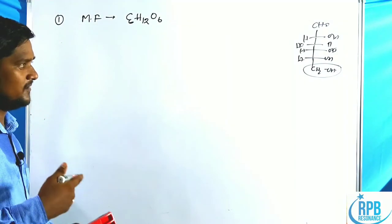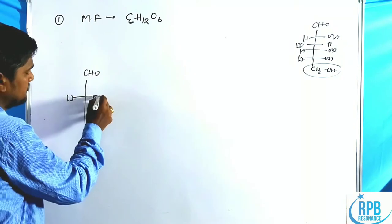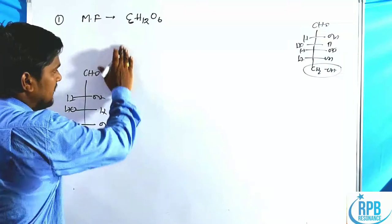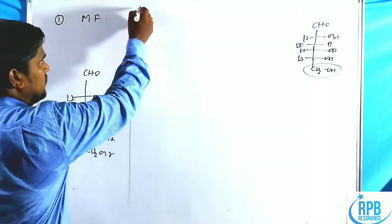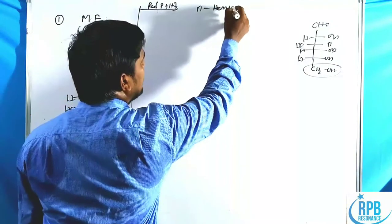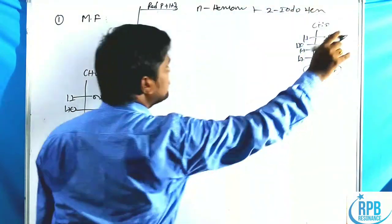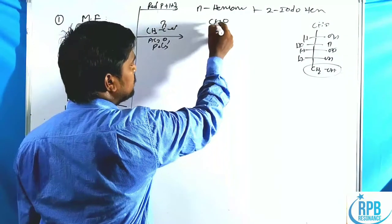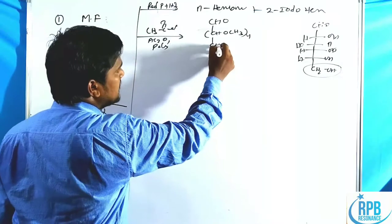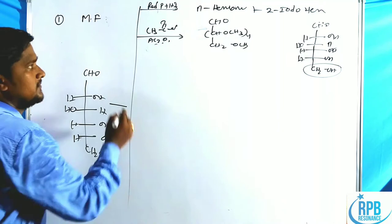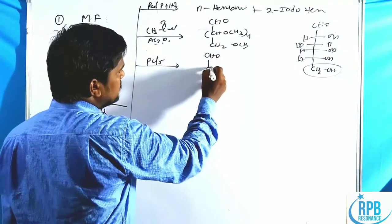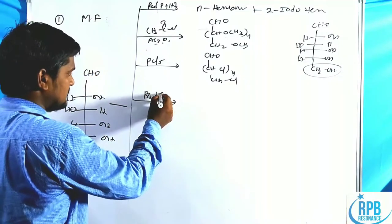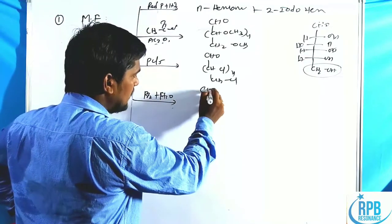For a quick revision: the structure of glucose is CHO-CHOH-CHOH-CHOH-CHOH-CH2OH. Reaction 1: Red phosphorus + HI gives n-hexane and 2-iodohexane. Reaction 2: Acetic anhydride or acid chlorides give penta-acetate (CH-O-COCH3 four times, CH2-O-COCH3); PCl5 gives the penta-chlorinated product.